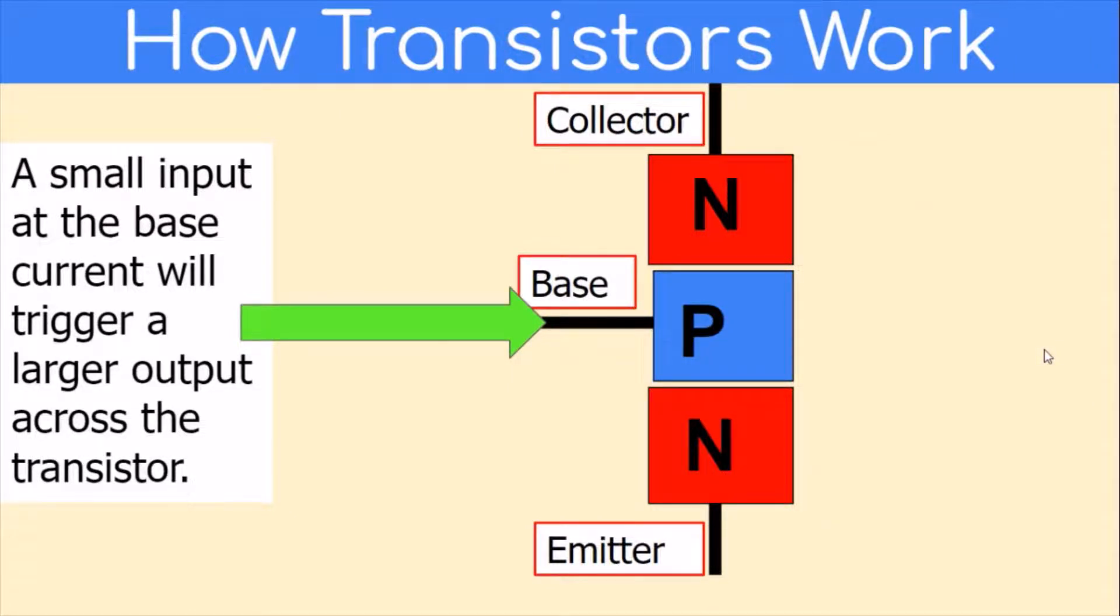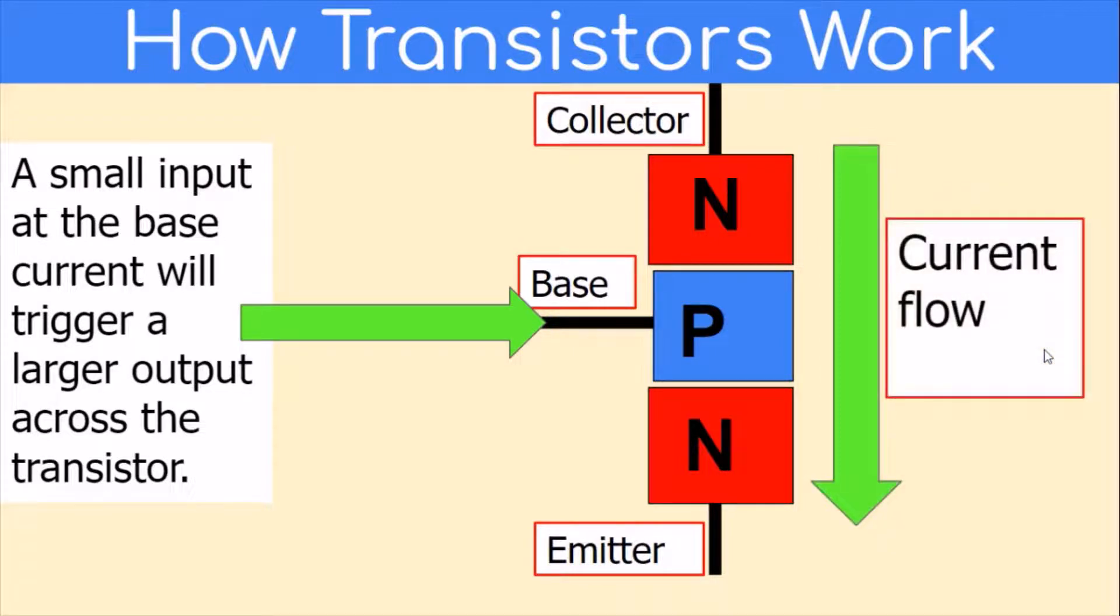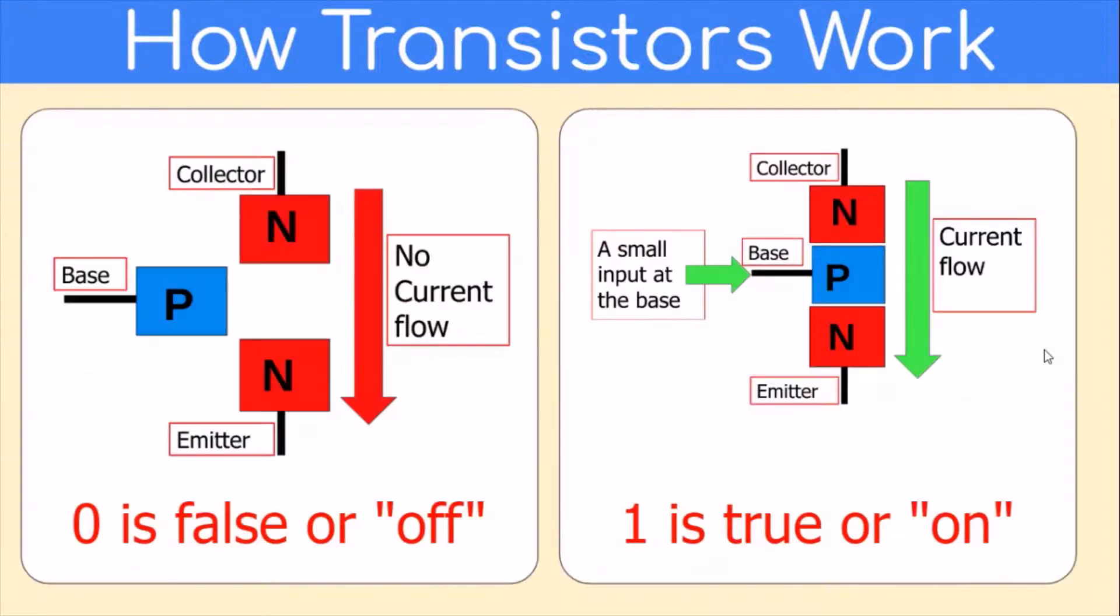Current flows from the collector to the emitter. The transistor works like a switch. Once we apply a small current to the base, it allows a larger current to flow from the collector to the emitter.